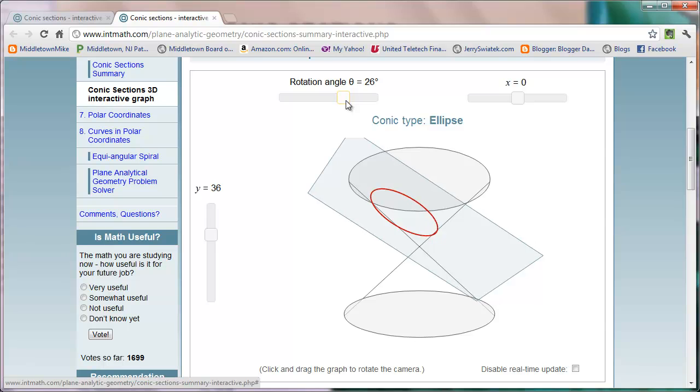If we continue with the tilt, we get to a point where the plane is only intersecting one of the cones, but it's coming out the top of the cone, and we get a parabola.